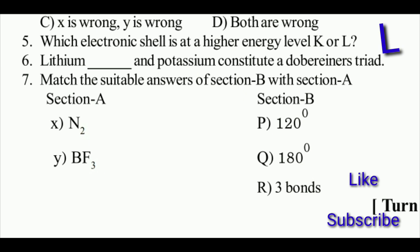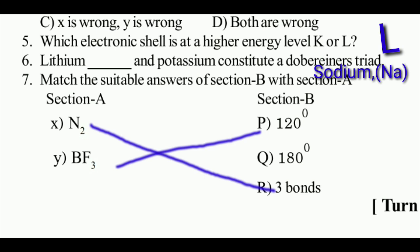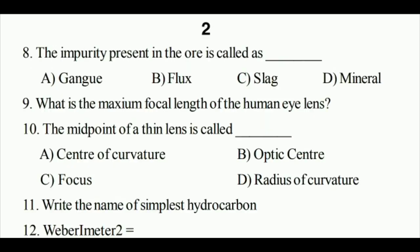Which electronic shell is at higher energy level K or L? Answer: L. Lithium and potassium constitute a dobereiners triad - sodium is the right answer. Match the following: N2 has 3 bonds, BF3 has bond angle 120 degrees, so X to R, Y to P is the correct match.